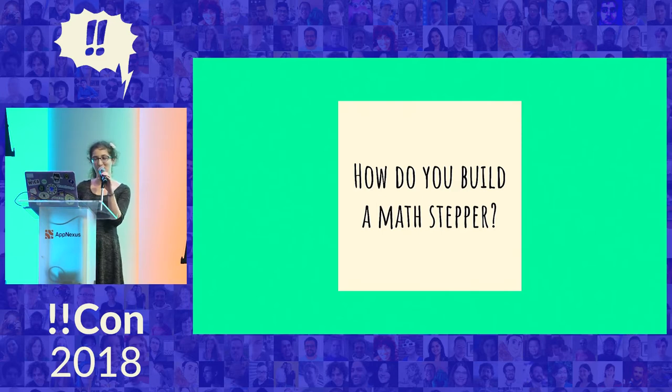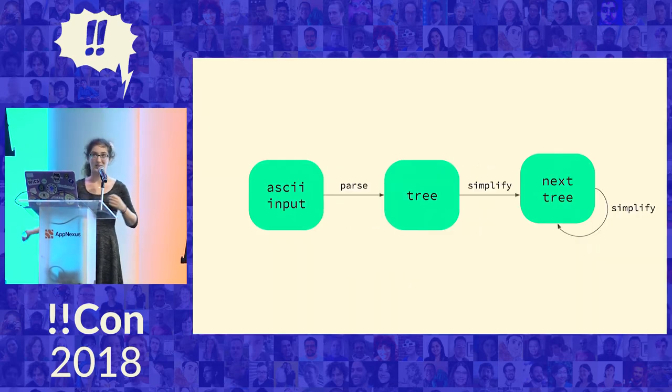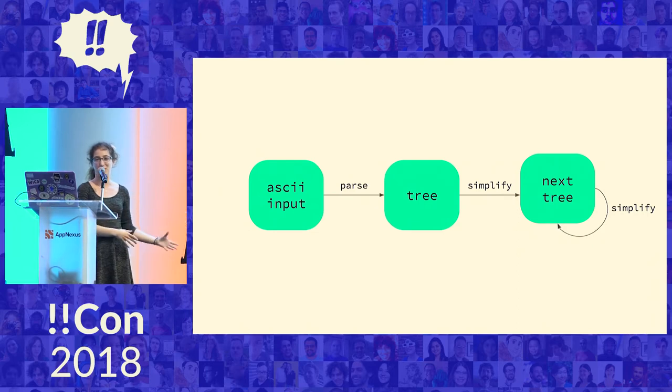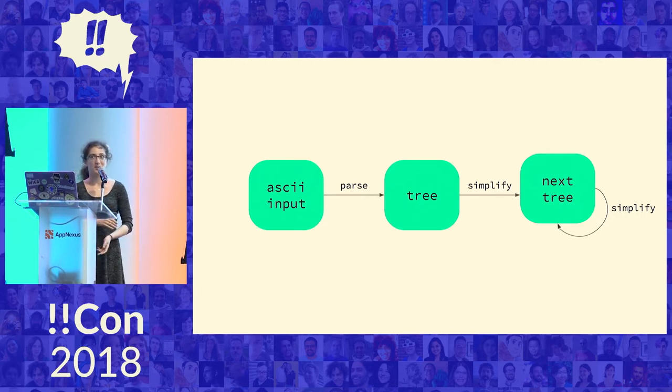So how do you build a step by step math solver? You might be wondering. And we're going to get into that. All right. So you get some ASCII math text input that is parsed into a tree. That tree is simplified a bunch of times. That's like the step by step part until eventually the algorithm decides that there is nothing left to simplify and then it's done.